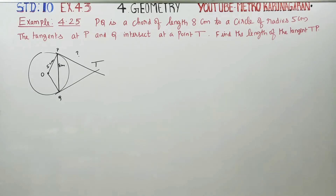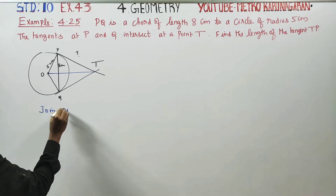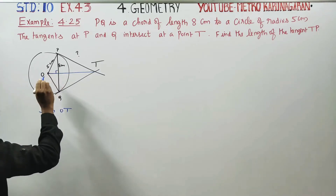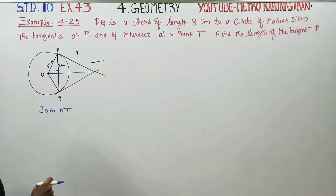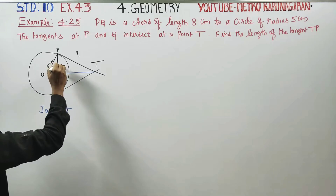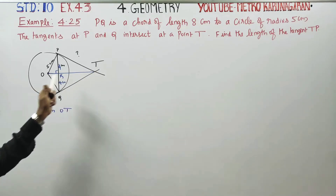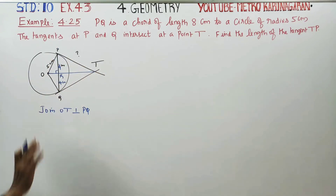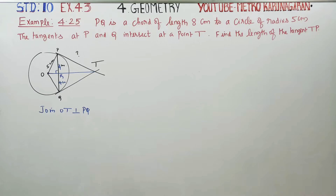If you want to do this, you can join OT. With the center of the chord, the chord will be perpendicular. Since the chord is perpendicular, OT bisects PQ, so over PQT will be R. We go to OT — this is 4 cm and this is 4 cm. If you join OT, it will be perpendicular to PQ, and it bisects the chord.